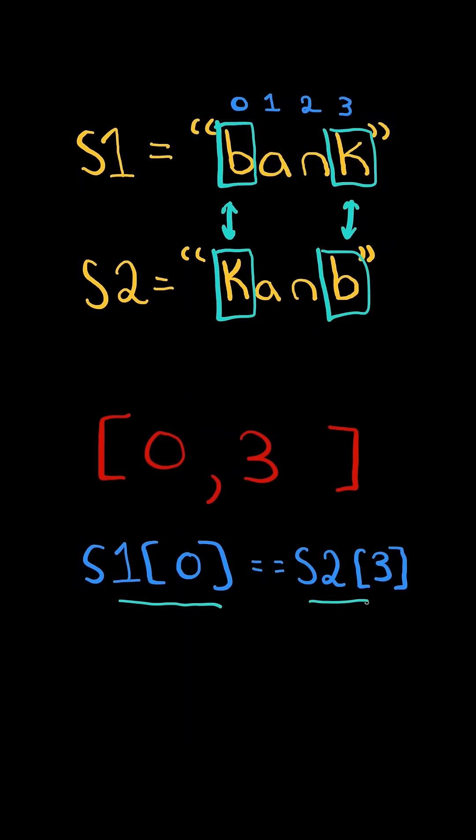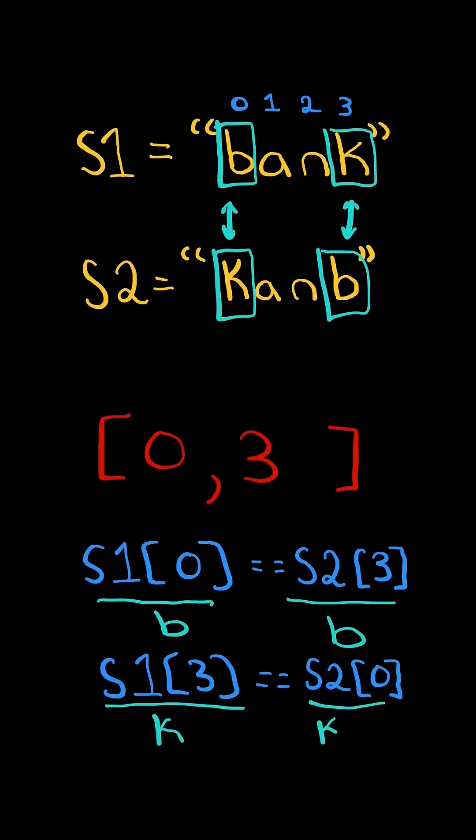Then we check the characters at the indices. We check if s1 at zero is equal to s2 at three. And vice versa, we check if s1 at three is equal to s2 at zero.